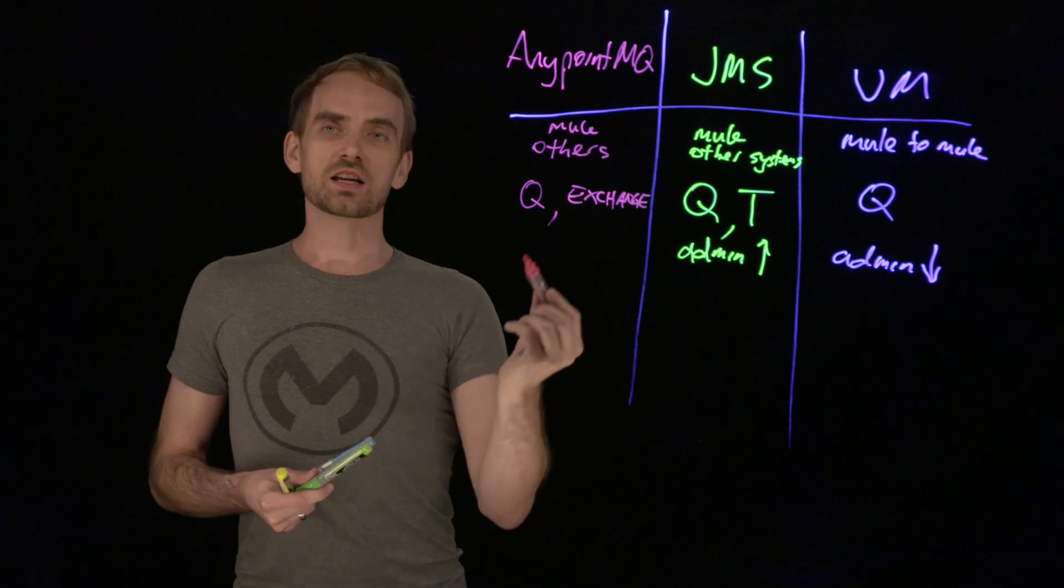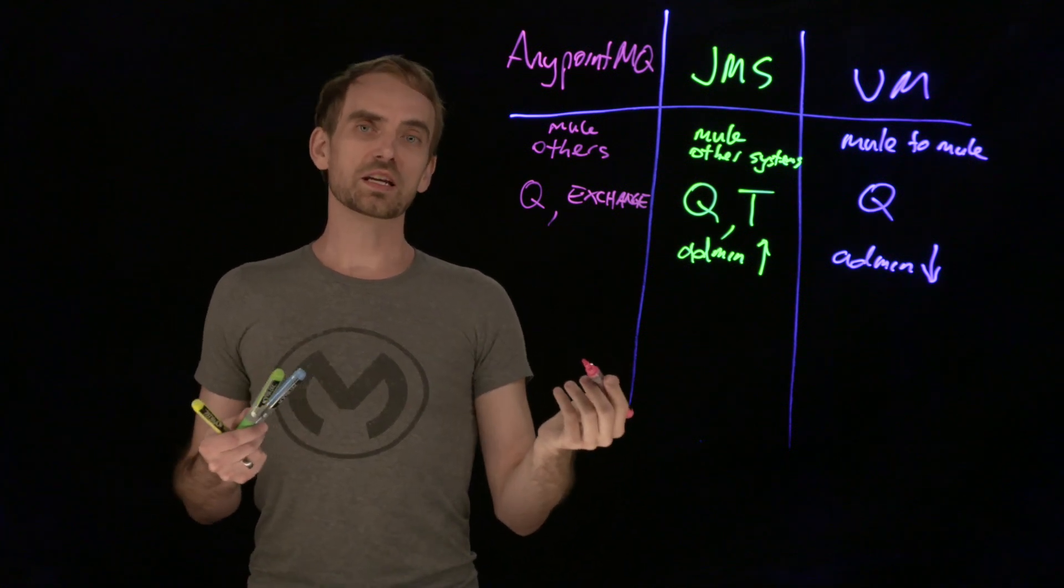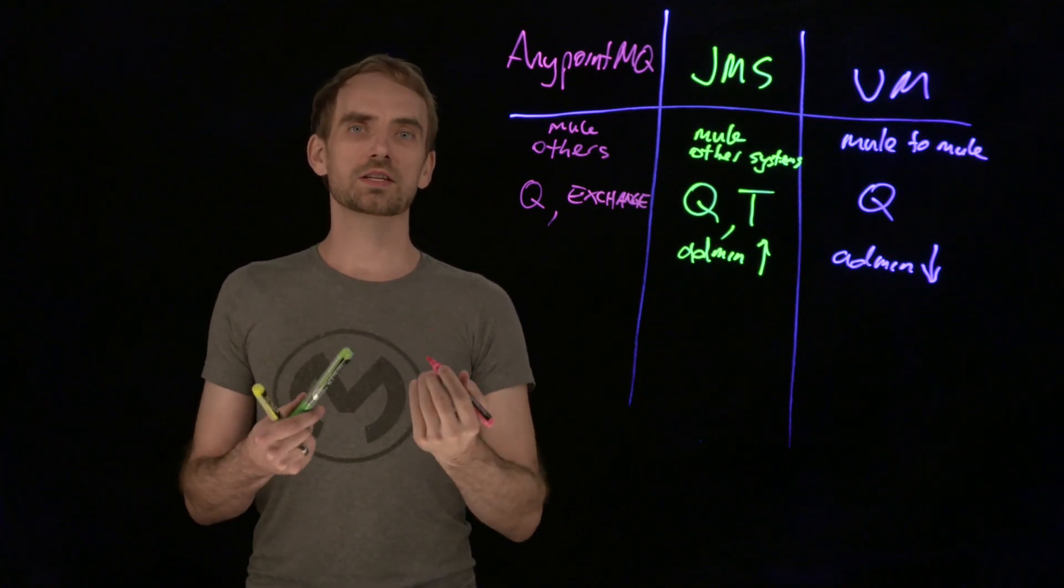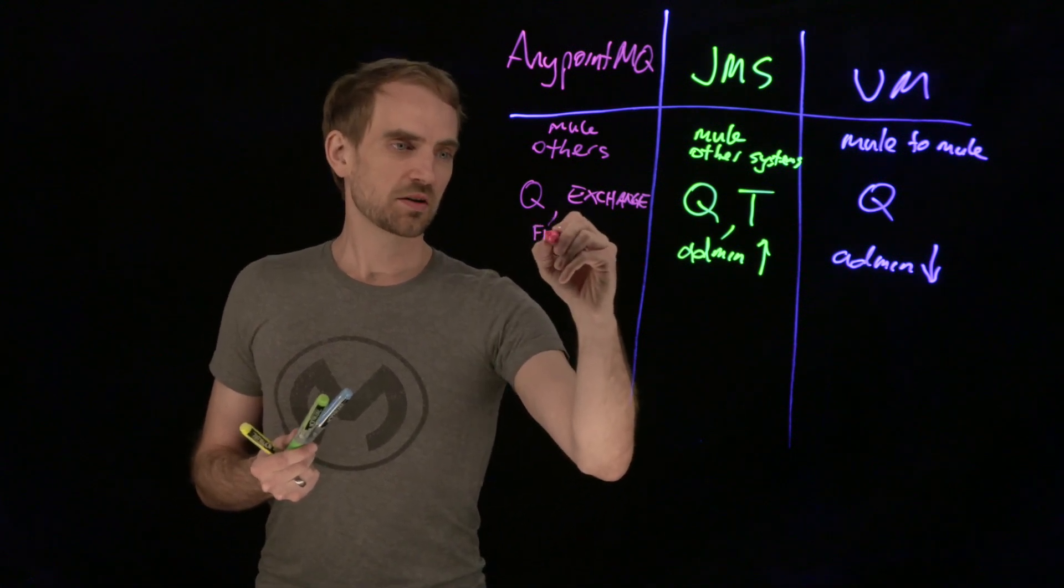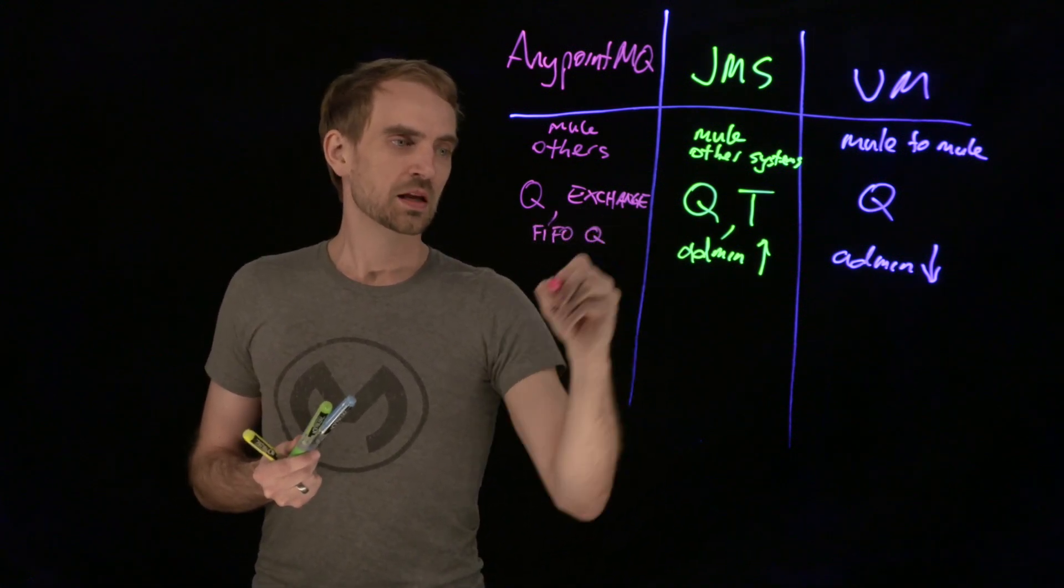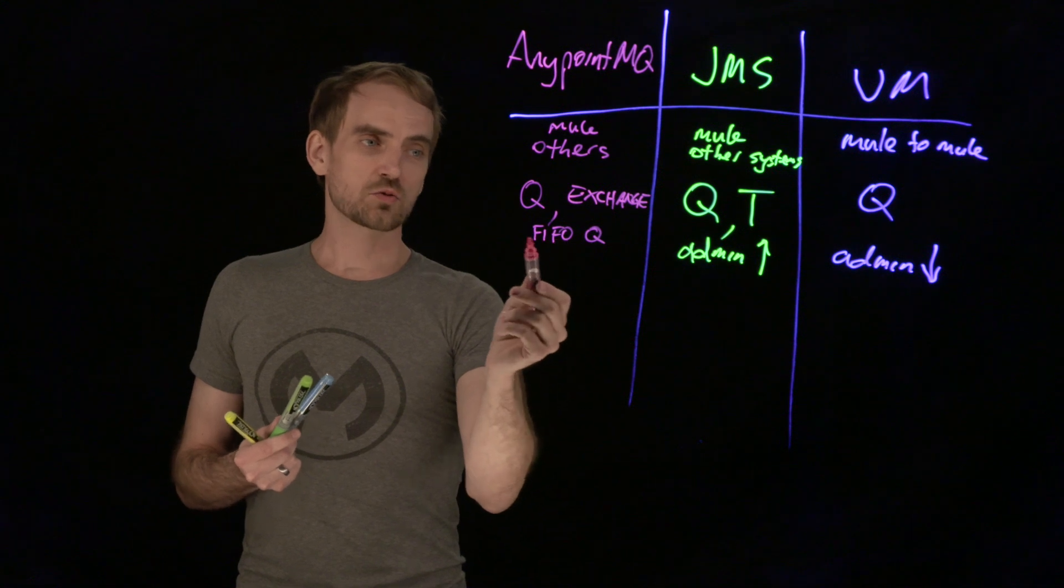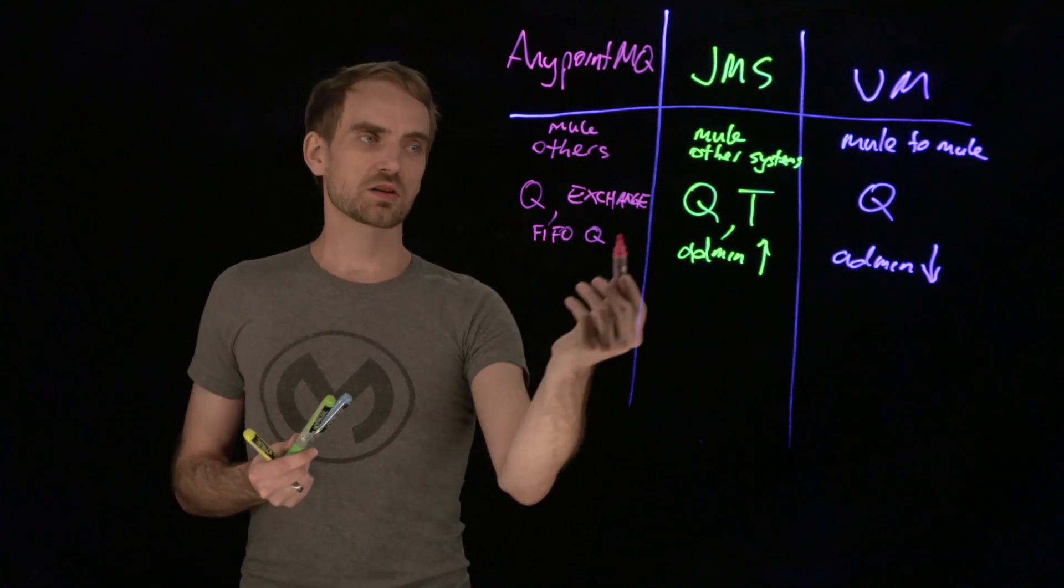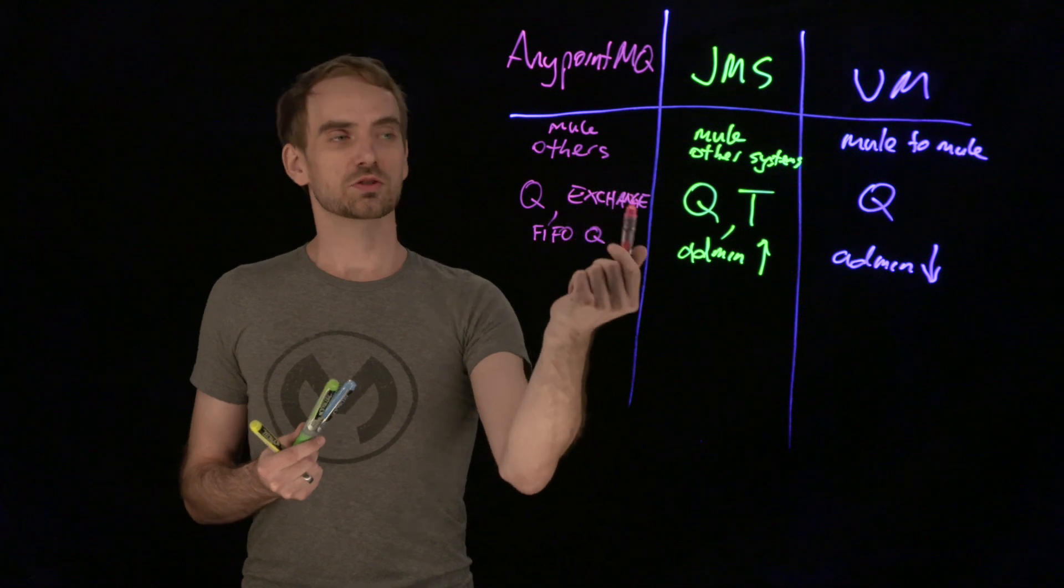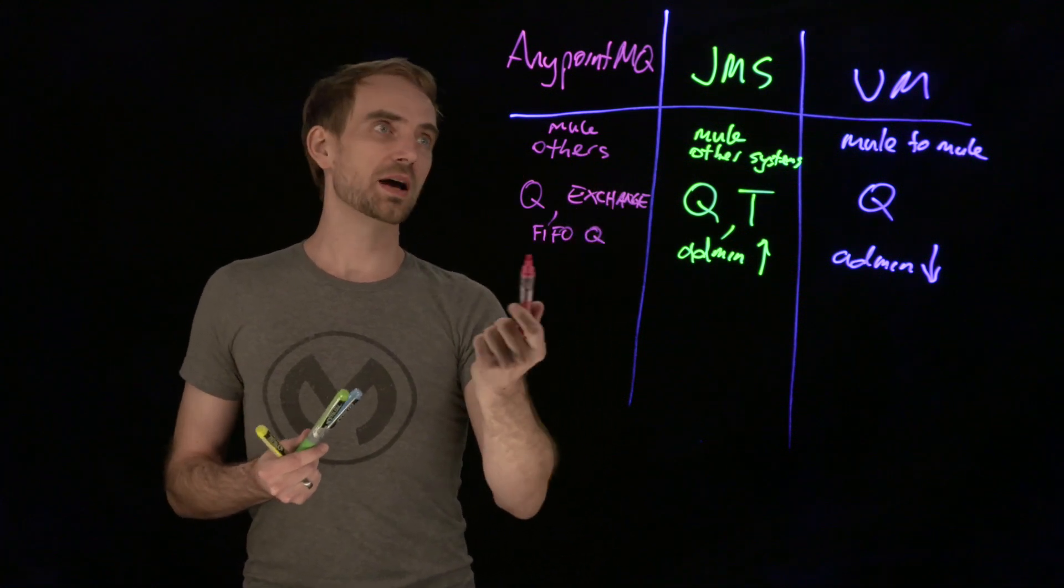An exchange is a one-to-many copy operation. So, you publish one message and it goes to multiple queues. And there's one final option, which is FIFO queues. FIFO queues are strict ordering of first in, first out. So, those are the three concepts that you need to know about for AnyPointMQ.